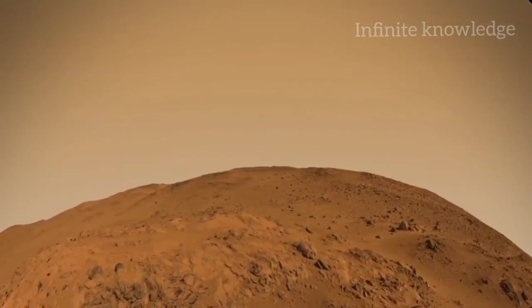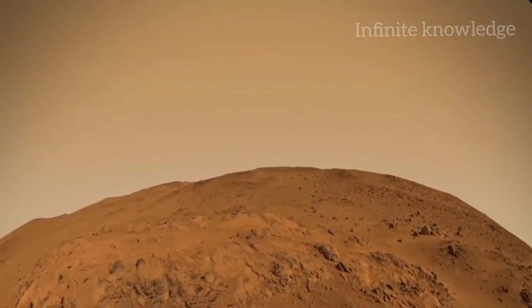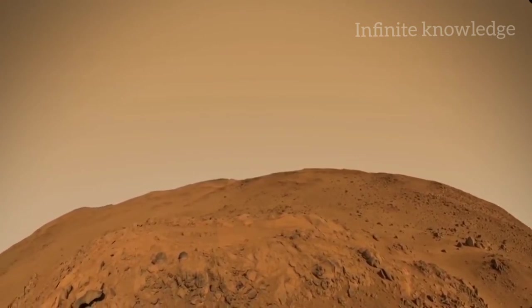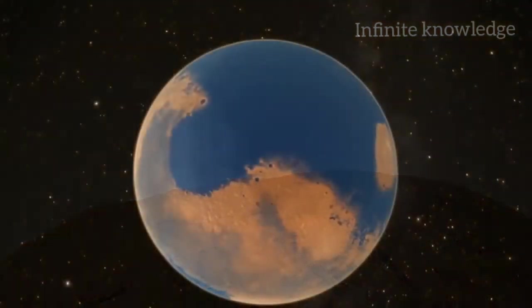Mars is now a dry desert, but it has features indicating that the red planet once had surface water and an atmosphere thick enough to support a water cycle, seas, and perhaps life.